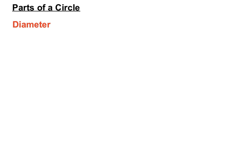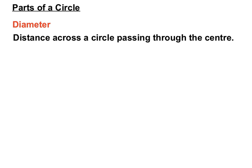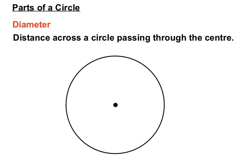We have a diameter. The diameter is the distance across a circle passing through the centre. So there's a circle, there's a centre, and we have an interval that passes across the circle and goes through the centre to the other side, and that's called our diameter.